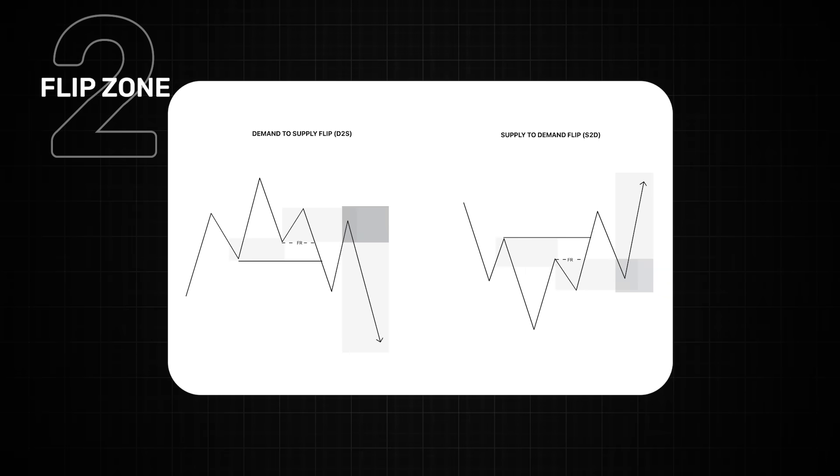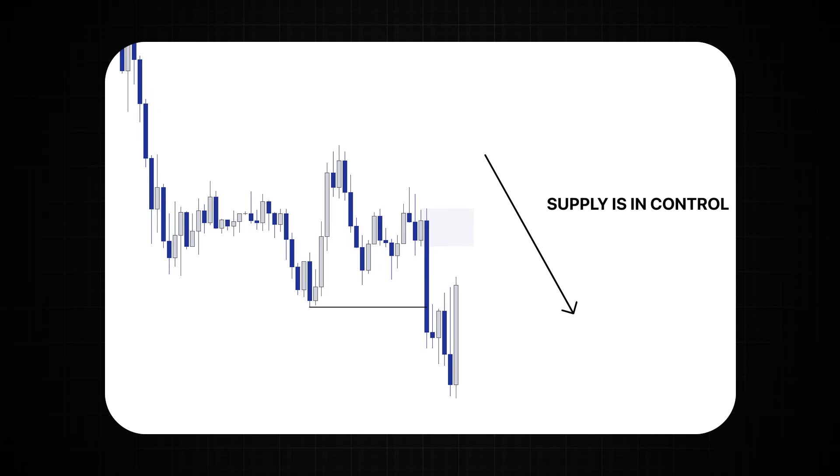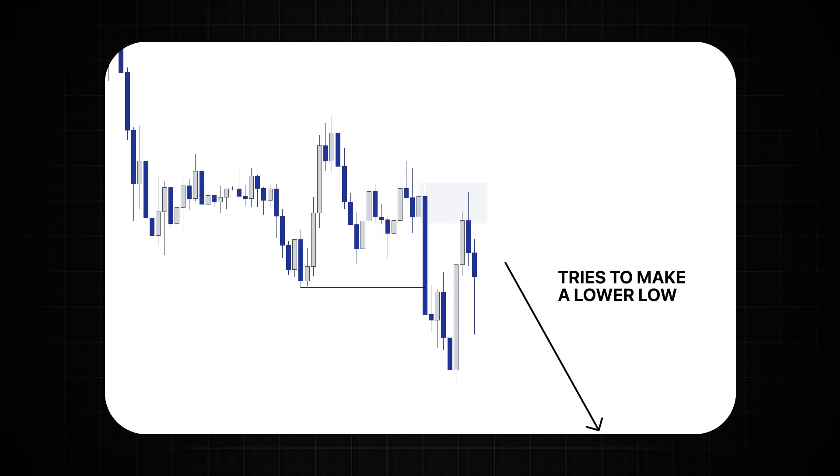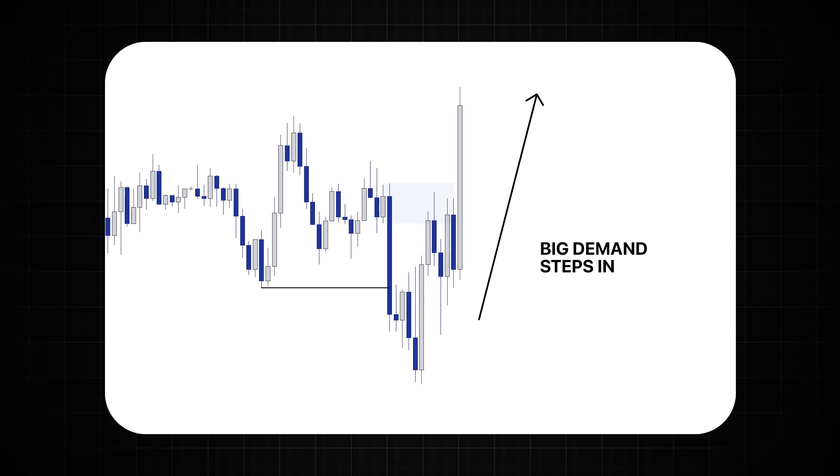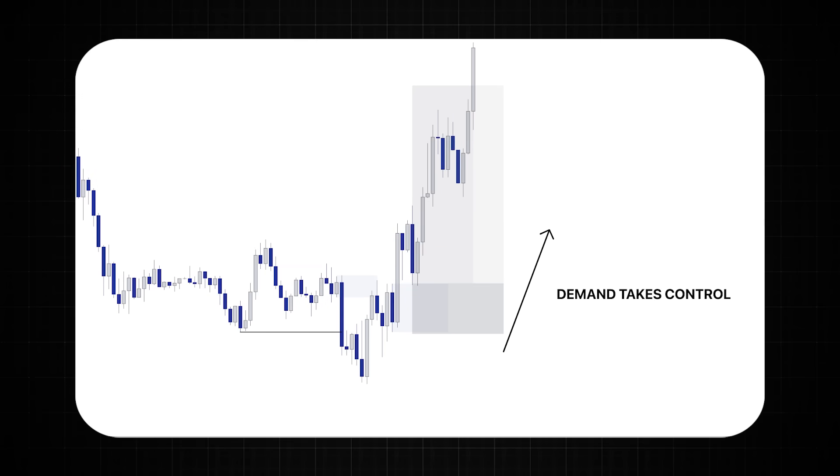Number two is if it is a flip zone. Now the key here is that you must see that interaction between supply and demand until one overpowers the other. Here you can see supply was in control but when price returns to it supply tries to make a lower low but it fails to do its job because huge demand steps into the market to overpower it. That pattern then shows us that supply has now flipped to demand and this is a high probability area for us to get long. But remember you must see that interaction first for it to be valid.